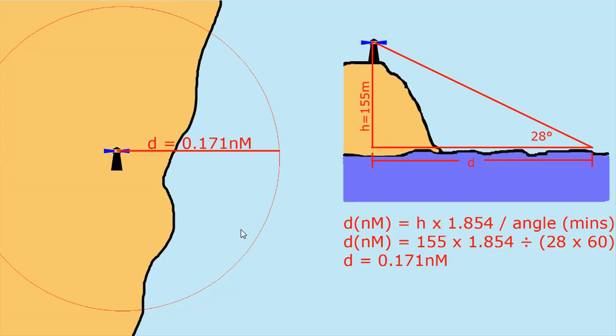Another way you can do it is by using another formula. It works out with a similar answer. It's not exactly the same but the answer works out similar and is close enough. And that is that the distance in nautical miles is the height in meters multiplied by 1.854 divided by the angle in minutes.